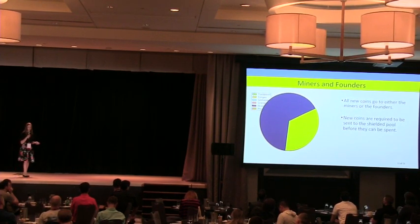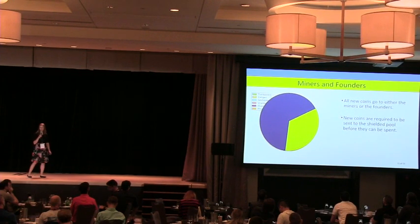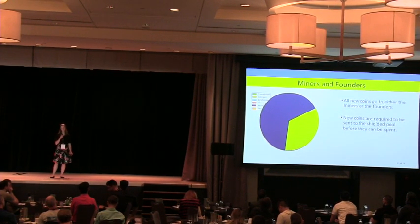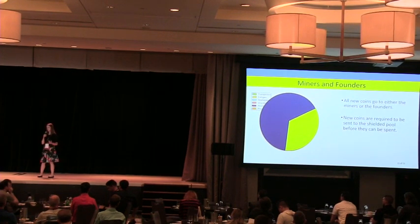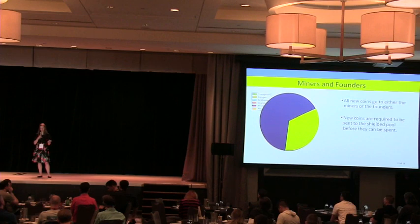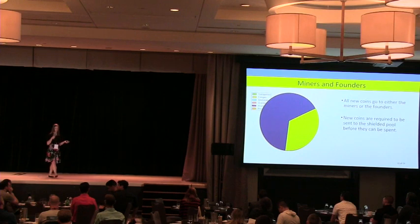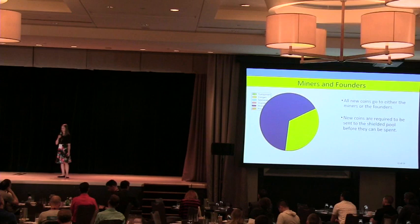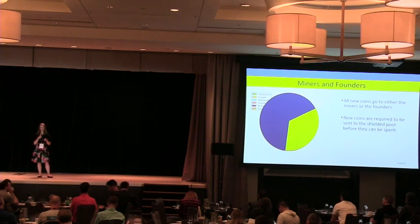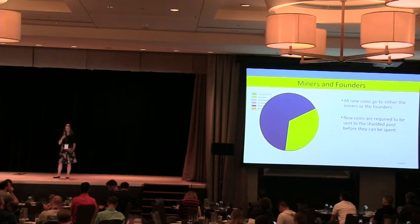In Zcash, all newly generated coins are sent to miners and founders, who are the primary users of the shielded pool essentially because the protocol requires them to pass coins through the pool before spending. Miners, who maintain the system, do not seem to care about their anonymity at all, while founders — the initial creators, investors, and maintainers — were also behaving in a semi-automated fashion.